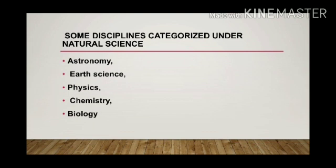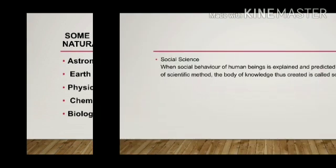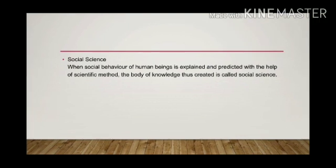There are some disciplines that we can categorize under natural sciences. For example, astronomy, earth science, physics, chemistry, biology. All these come under natural science. Here we can apply the scientific steps that we have already mentioned. You can gather the data in a methodical manner. You can analyze it. You can determine the relationship between facts and finally you can formulate causal explanations. So when it comes to the natural science, you can quantify the data. It's verifiable and you can arrive at an objective truth.